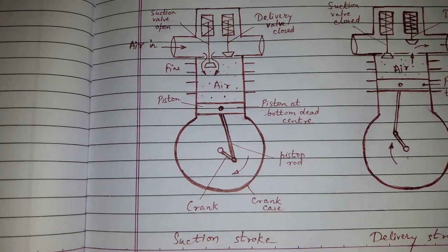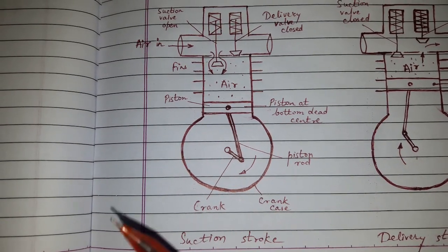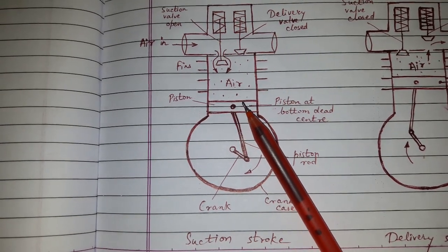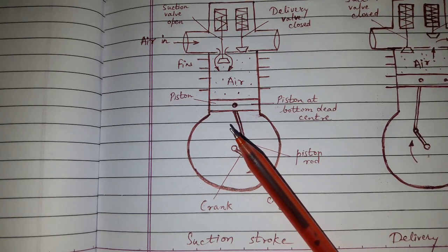In suction stroke, the piston is at the bottom dead center. Due to the downward movement of the piston, vacuum is created in the cylinder.